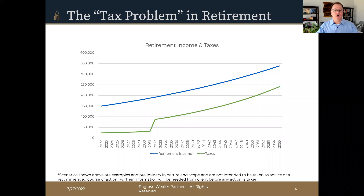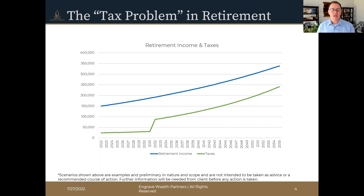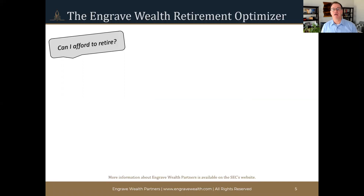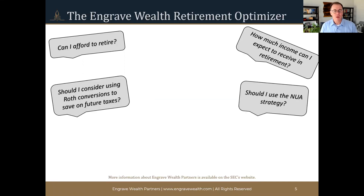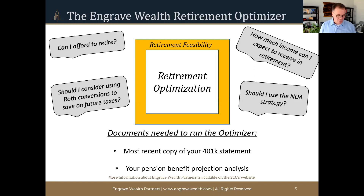Don't think about that as an unsolvable problem. We have solutions that help think about how to take some of those future taxes at higher rates and bring them forward to today at lower rates — that's what tax optimization is really all about. Unfortunately, most financial advisors don't do that in retirement. It's a specialty of ours at Engraved Wealth, and it's something we're going to focus on: building out a plan that recognizes how we can manage those taxes in a meaningful way, perhaps paying a little more in the early years to avoid significantly higher taxes in later years. All of that gets answered using our retirement optimization strategy, which is free of charge with no obligation.